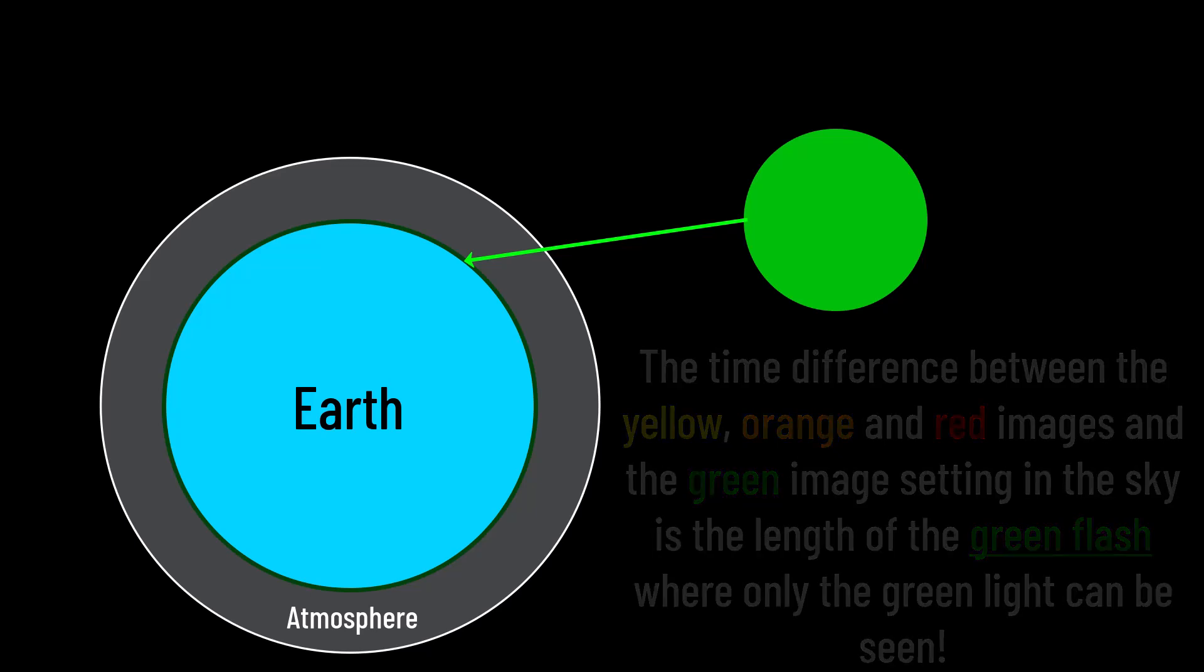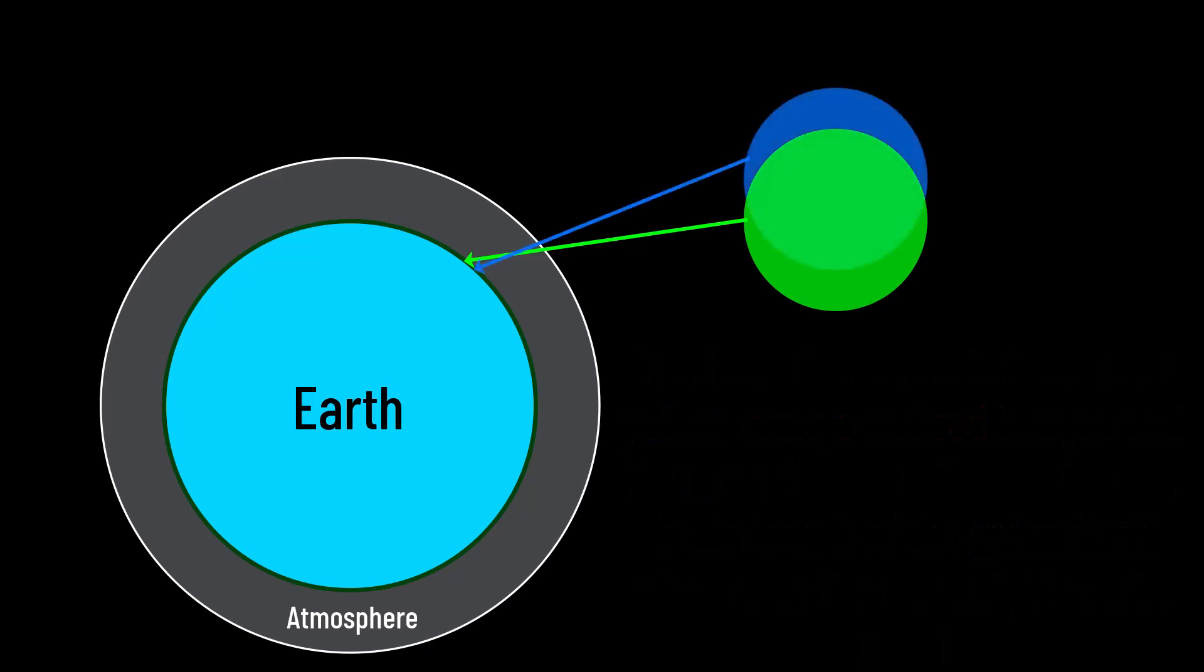It's worth noting that there can be a blue flash sometimes, when the atmospheric conditions are just right and don't scatter out almost all the blue light, although this is extremely rare.